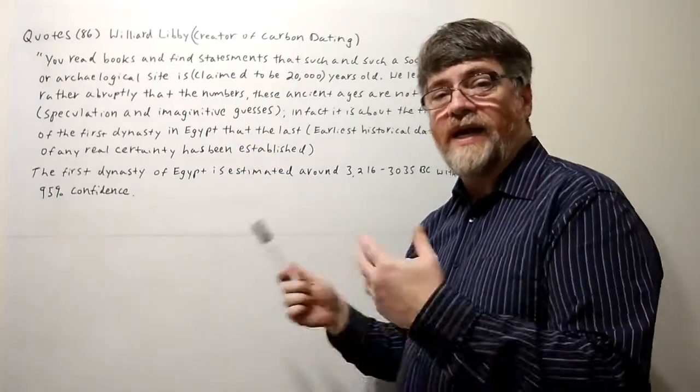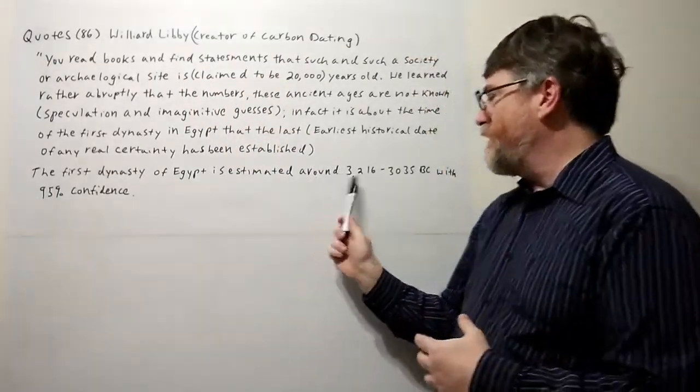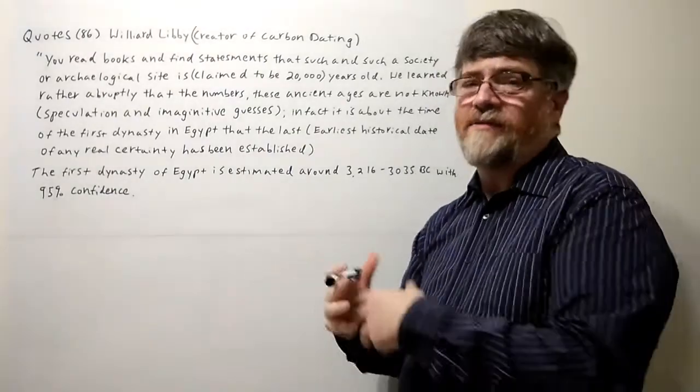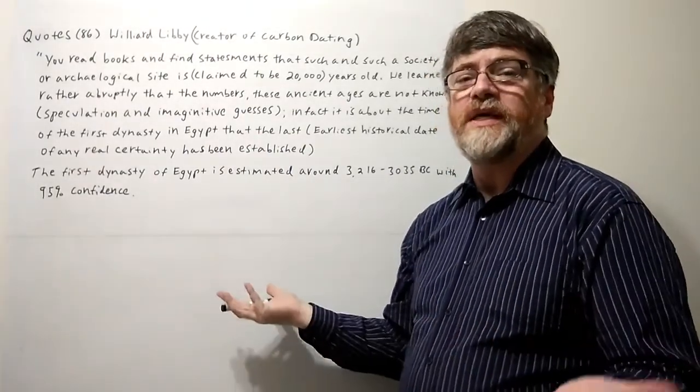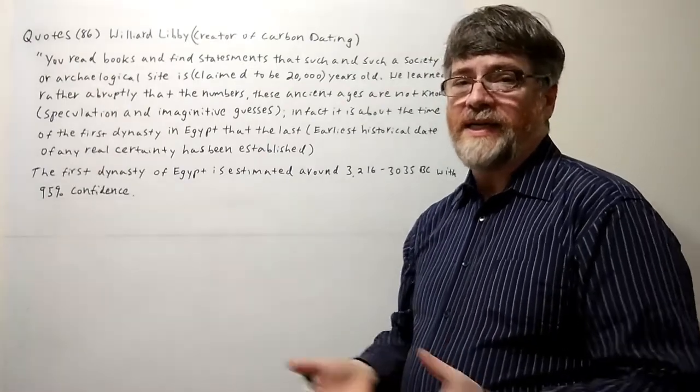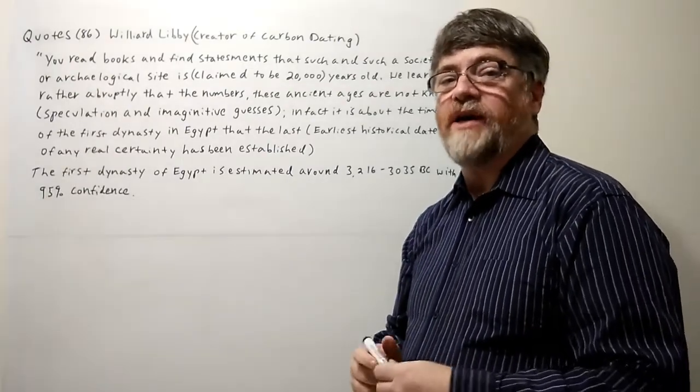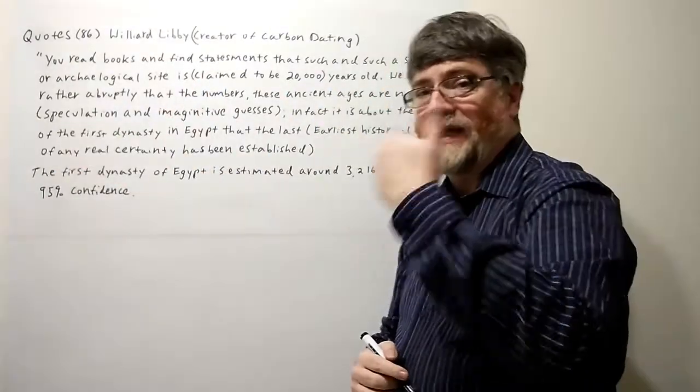And he's telling you that anything beyond 3,200 to 3,000 BC—maybe you could round it off to say 3,500 BC—is probably not very accurate. And the further you go back, the less accurate.